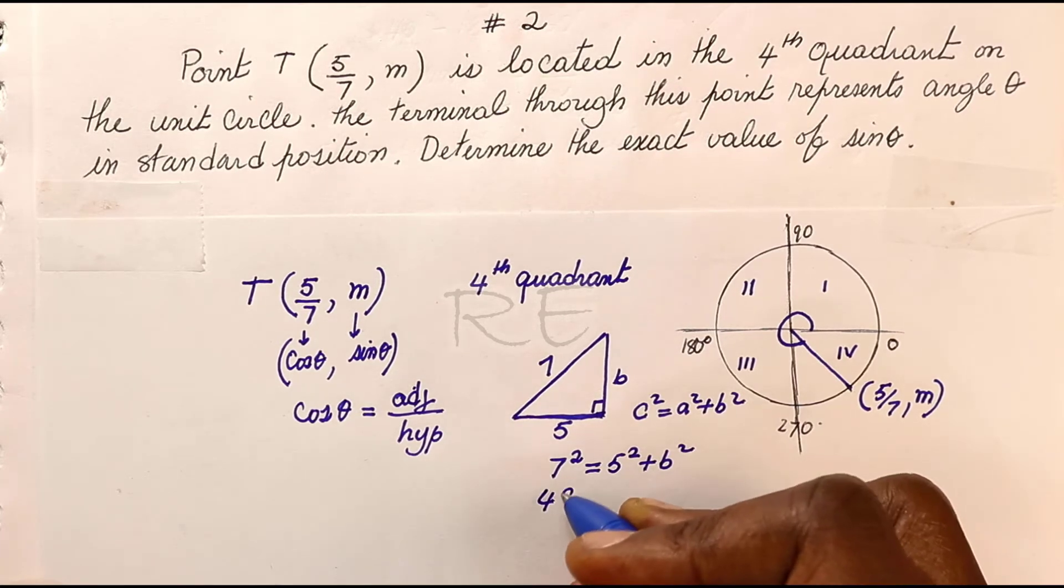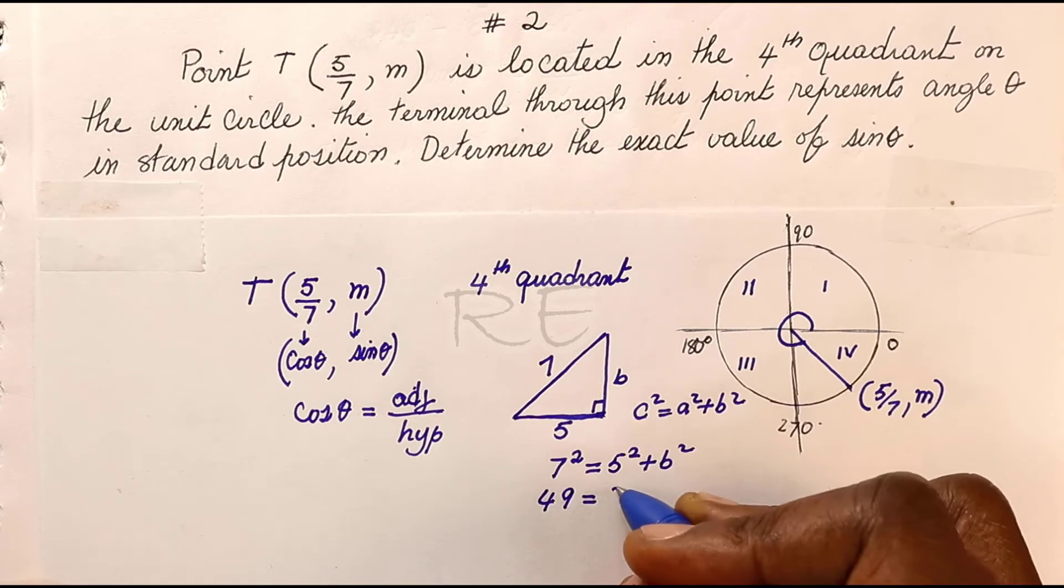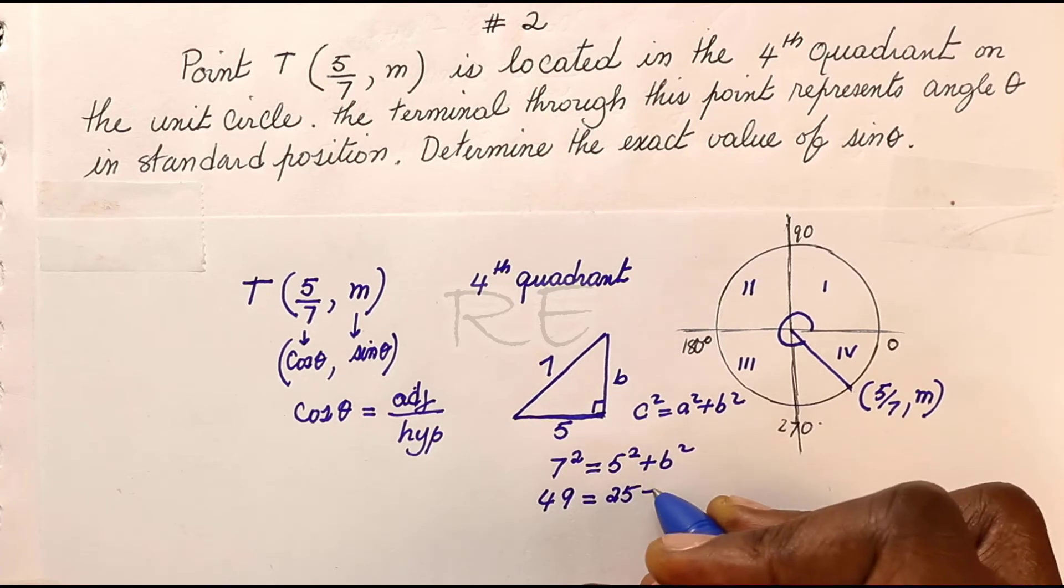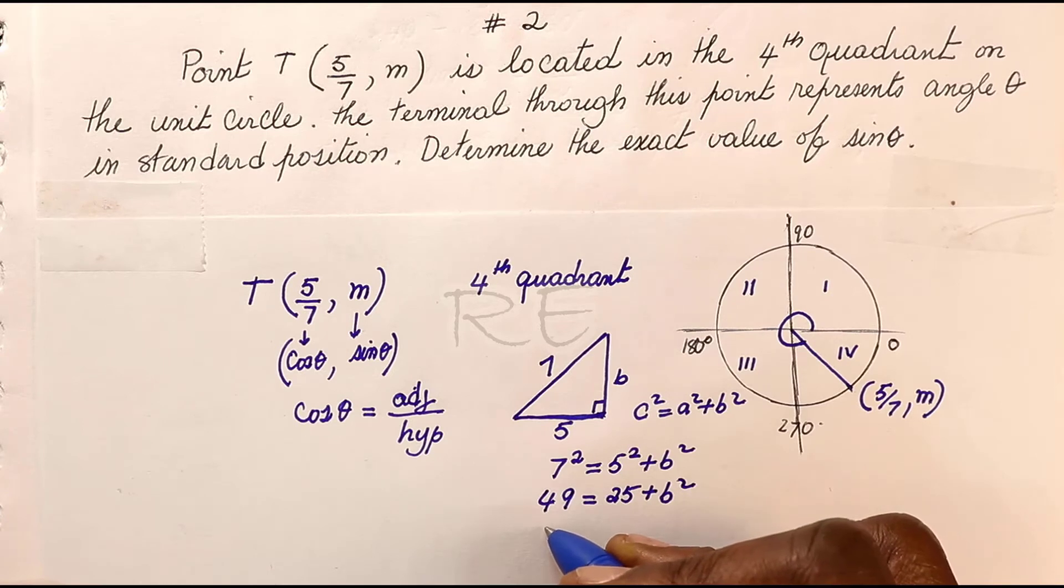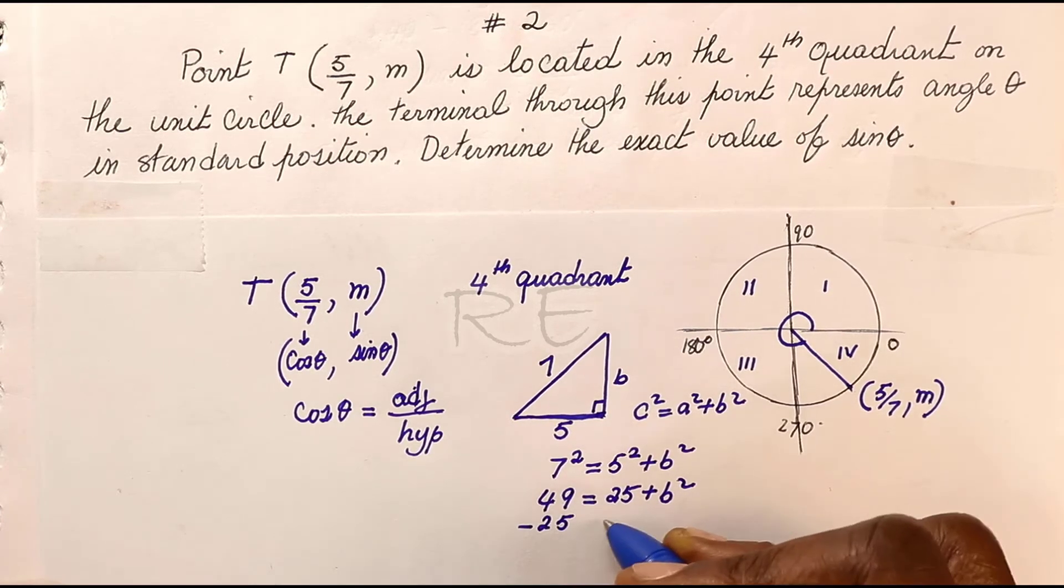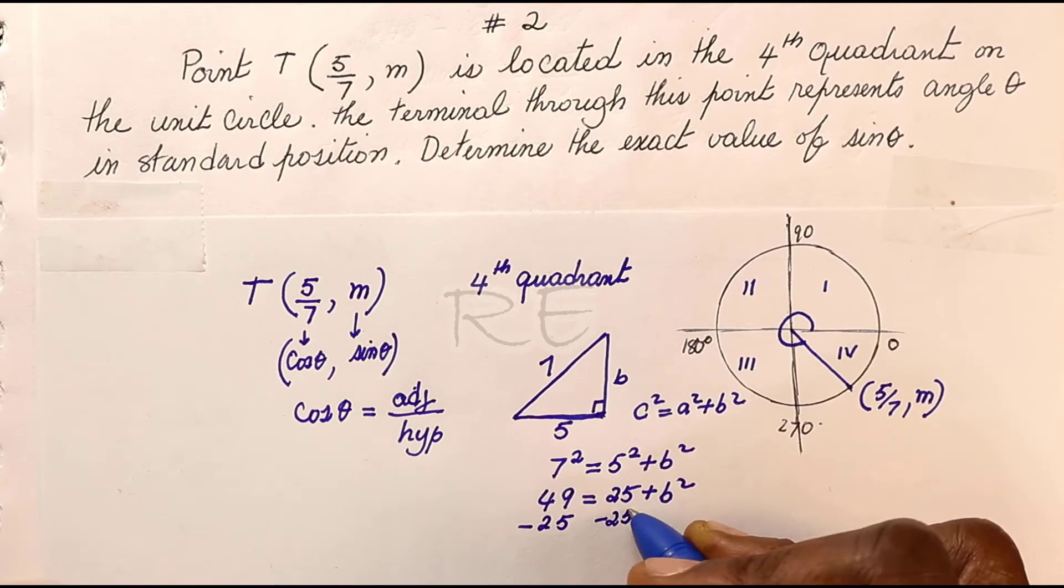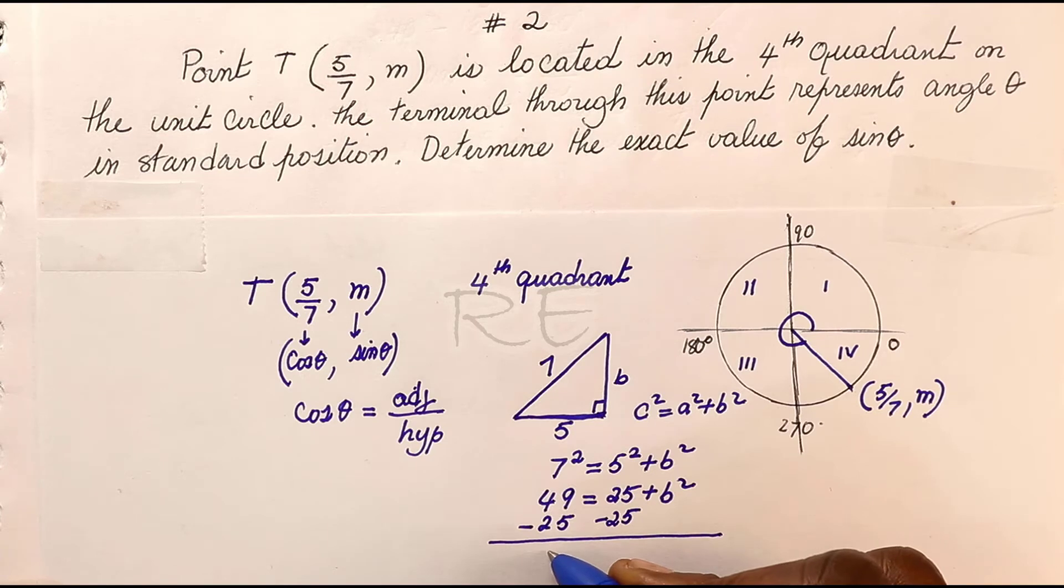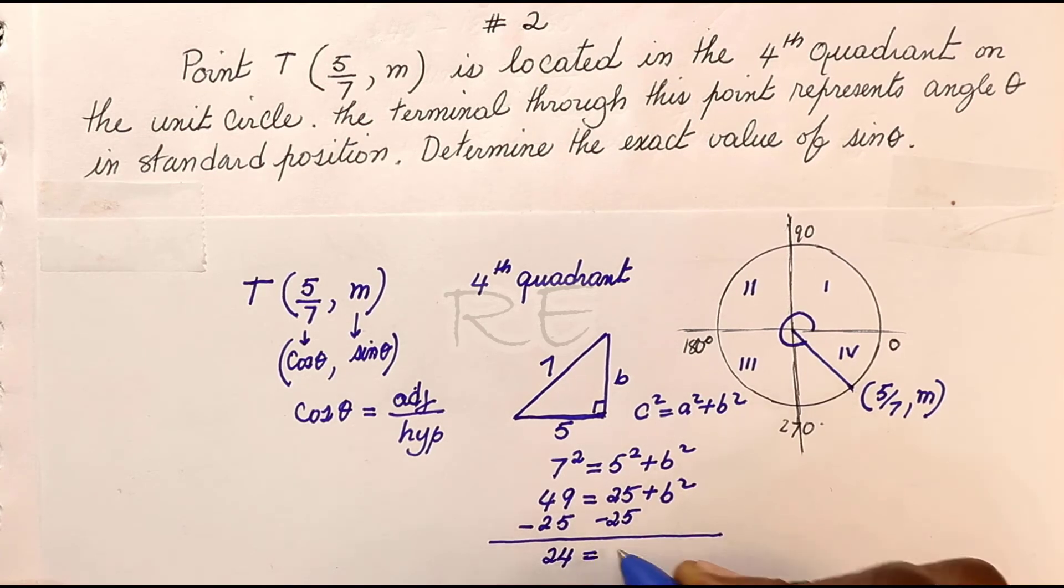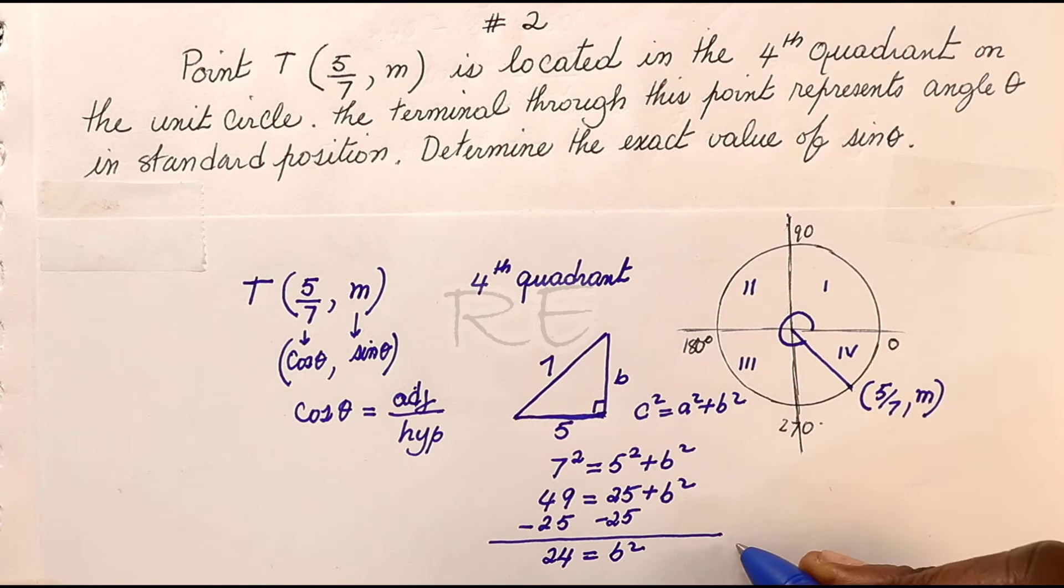7 squared is 49 and 5 squared is 25 plus B squared. Subtract 25 from both sides. We get 24. 24 is equal to B squared.